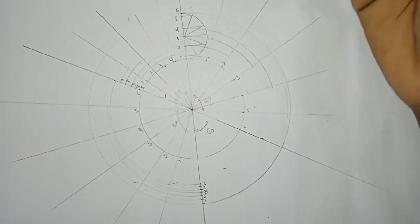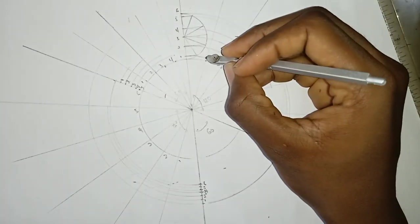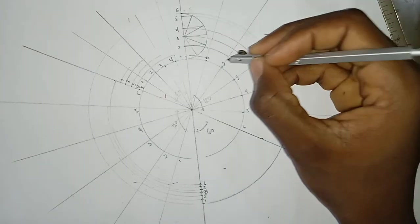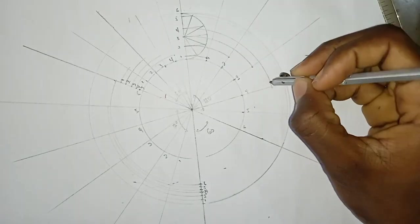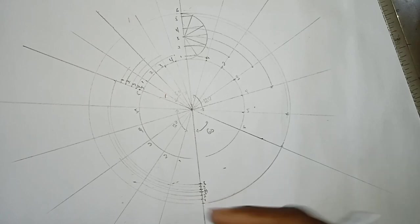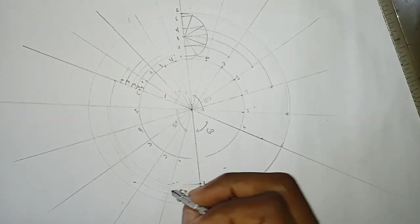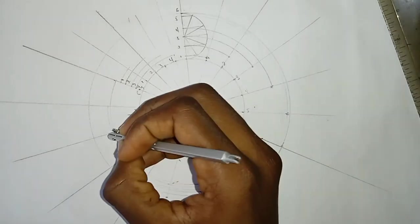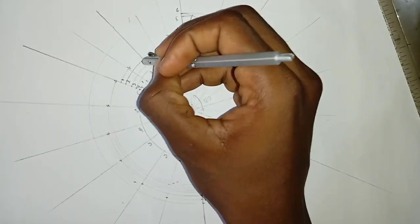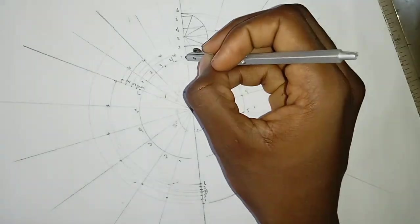So after doing that, now we need to draw our locus. How do we do it? Where all these lines, where 1 and 1 meet, you just mark them. Mark, mark, mark. And remember this is the reference, there's no motion here. And then you come here again, you mark, mark, mark. And then you keep marking till we are done.